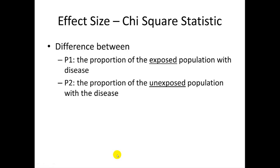So, what is P1 and P2? P1 is the proportion of the exposed population with disease. P2 is the proportion of the unexposed population with the disease. But, here's your first problem. If you knew what P1 and P2 were, you wouldn't have to do your study. So, how do you get these numbers to estimate your sample size?